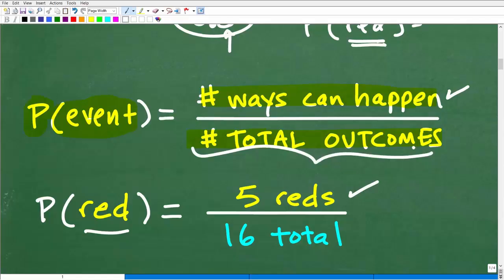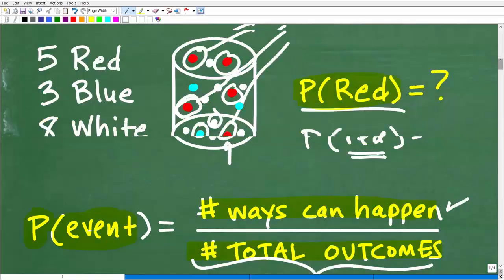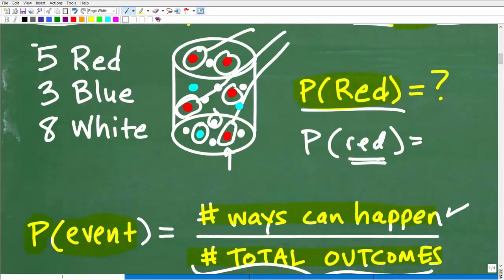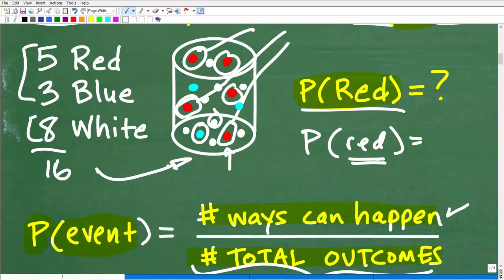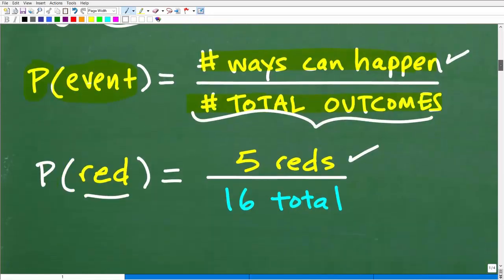But what's the total number of outcomes? Well, how many marbles in total do we have? Well, five and three is eight plus eight. Eight and eight is 16. There's 16 total marbles in here. So that's the total number of outcomes. So we have five reds over 16 total. So here we have a fraction five over 16.